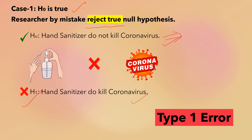This is Type 1 error, in which the researcher rejects the true null hypothesis. It can lead to serious concerns if that sanitizer is launched into the market — people may get infected with coronavirus, assuming the sanitizer works, but in actuality the sanitizer does not work.